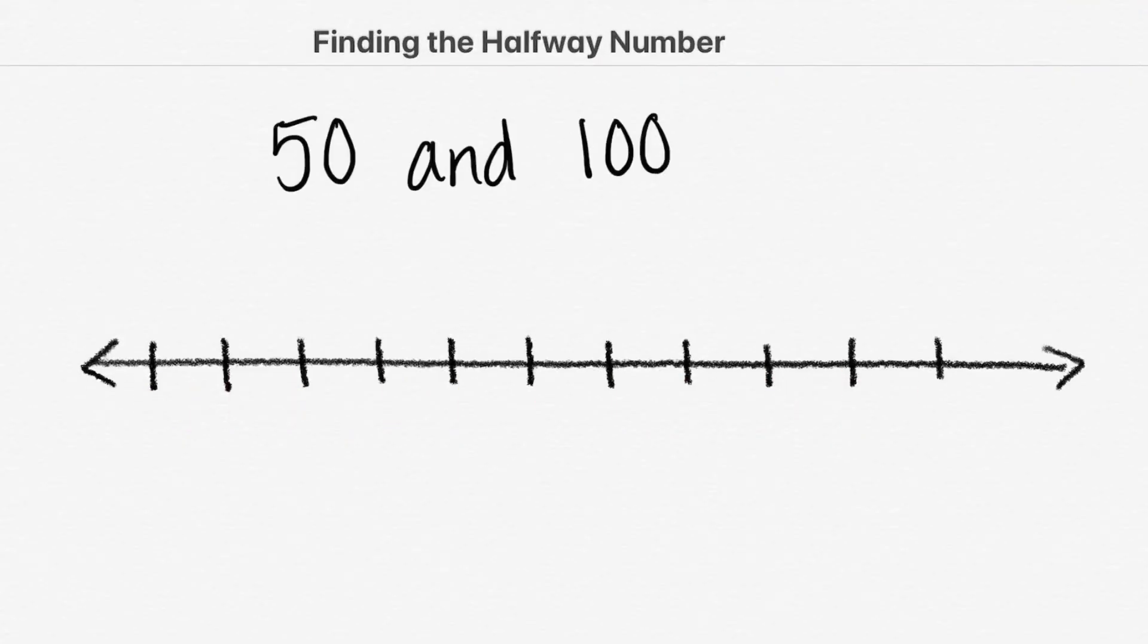Now we're going to find halfway between 50 and 100. If we jump by ones, there won't be enough space. If we jump by tens, we would have too much space left over. So we're going to have to jump every five numbers.